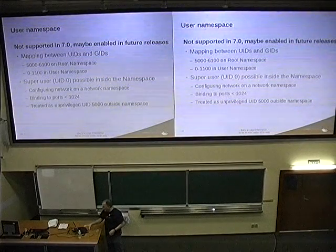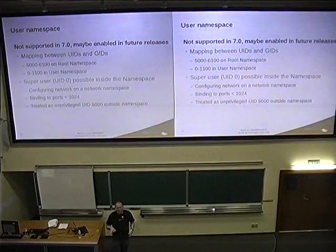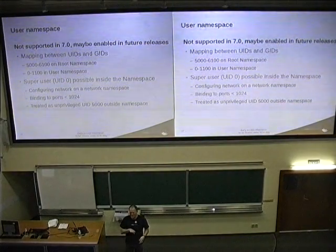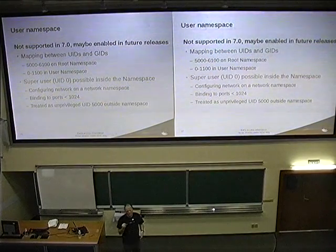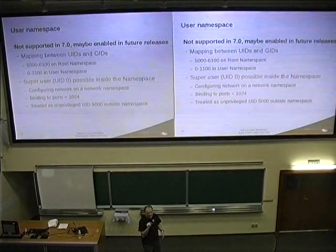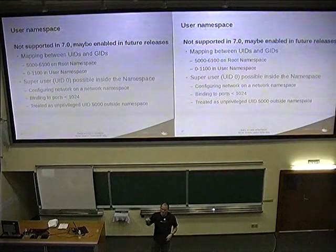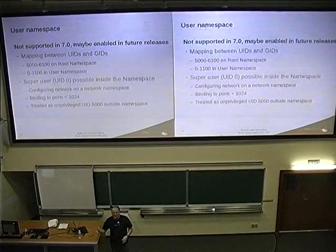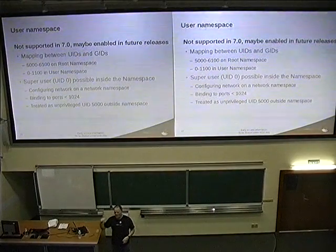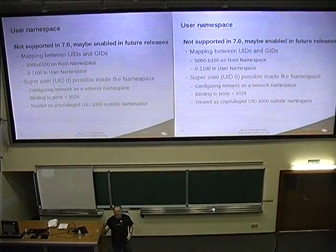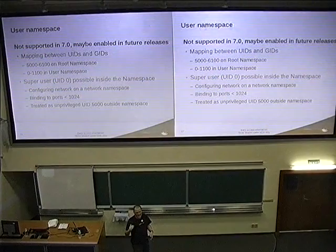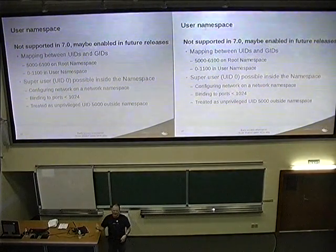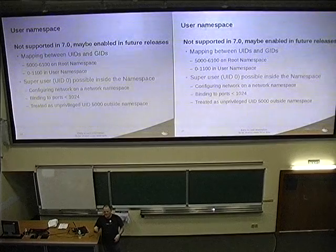Right now in RHEL 7, user namespace is turned on in the kernel but off in user space. The unshare syscall — the way you set up a namespace — will not allow you to set the user namespace. We have it on in the kernel because we want ABI compatibility. The goal is hopefully at RHEL 7.1 we're confident enough to allow the user namespace to be turned on. If it gets turned on, I can actually tighten the SE Linux policy for contained applications, because right now I have to give real capabilities instead of namespace capabilities.